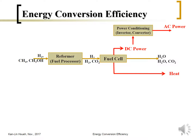The DC power can go through power conditioning — such as an inverter or converter — and be converted into high-voltage alternating current. For the efficiency we consider here, we focus on the fuel cell itself: how much chemical energy is brought into the fuel cell and how much is converted into electricity and heat. We consider the fundamental energy balance: energy in equals energy out as DC power or heat.